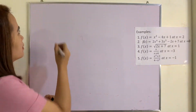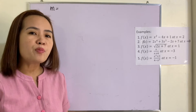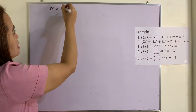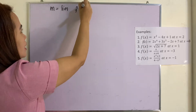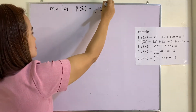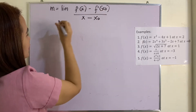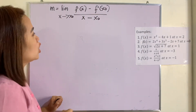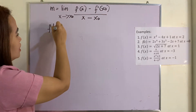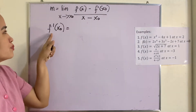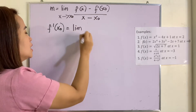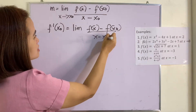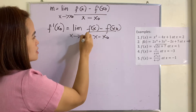Let us recall first the two formulas. Remember that the slope of the tangent line to a given function is M equals the limit of F(x) minus F(x₀) over x minus x₀ as x approaches x₀. Which is also the derivative — the definition of the derivative of a function: F prime of x₀ equals the limit of F(x) minus F(x₀) over x minus x₀ as x approaches x₀.